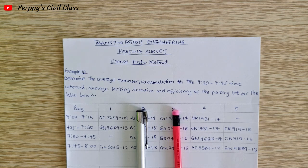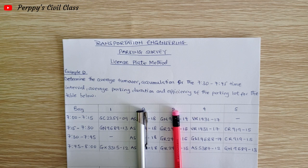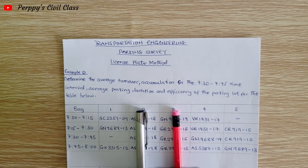Welcome to Purposeable Class. Today we will be looking at a topic under transportation engineering which is parking survey. We've already solved a question under the in-out survey; today we are going to solve a question under the license plates method. The question asks us to determine the average turnover, accumulation for the 7:30 to 7:45 time interval,